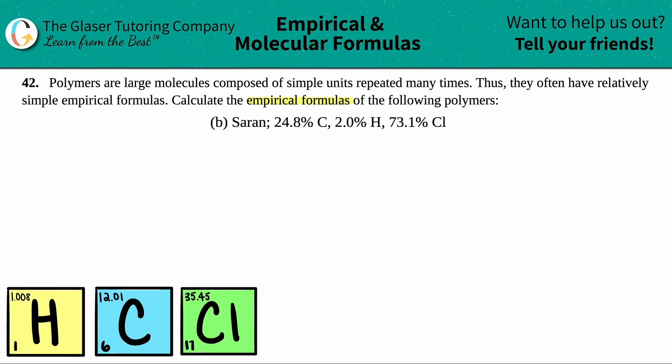So all that plastic wrap is, or this Saran wrap, is just a bunch of a single compound, just repeated thousands or millions or maybe even billions of times, depending on how long the piece of Saran wrap is. So we know how to calculate empirical formulas. It's a four-step process from the percentages, right? The percent compositions.